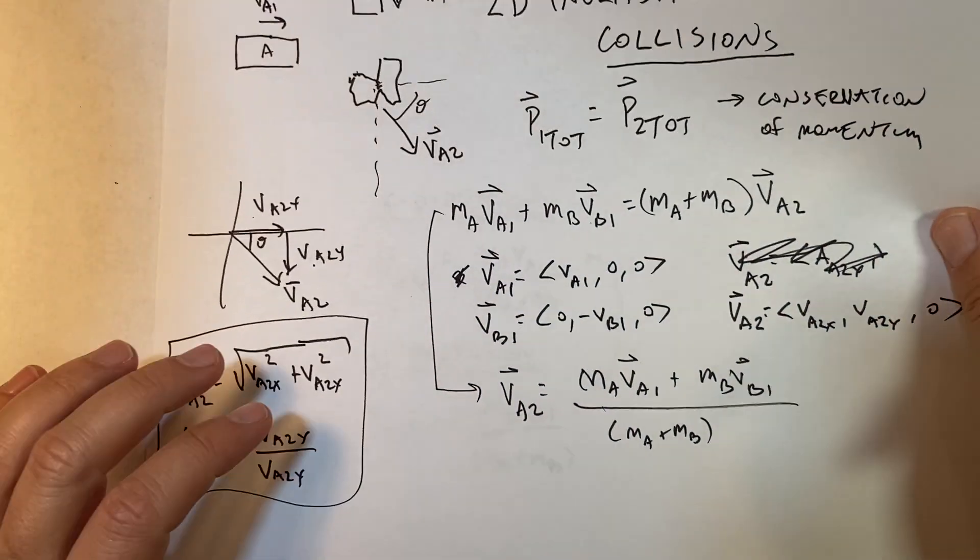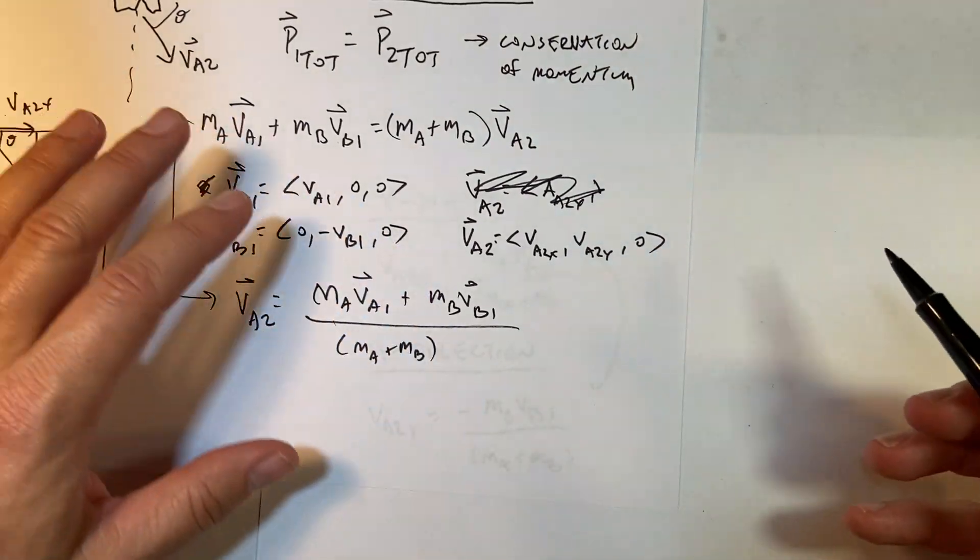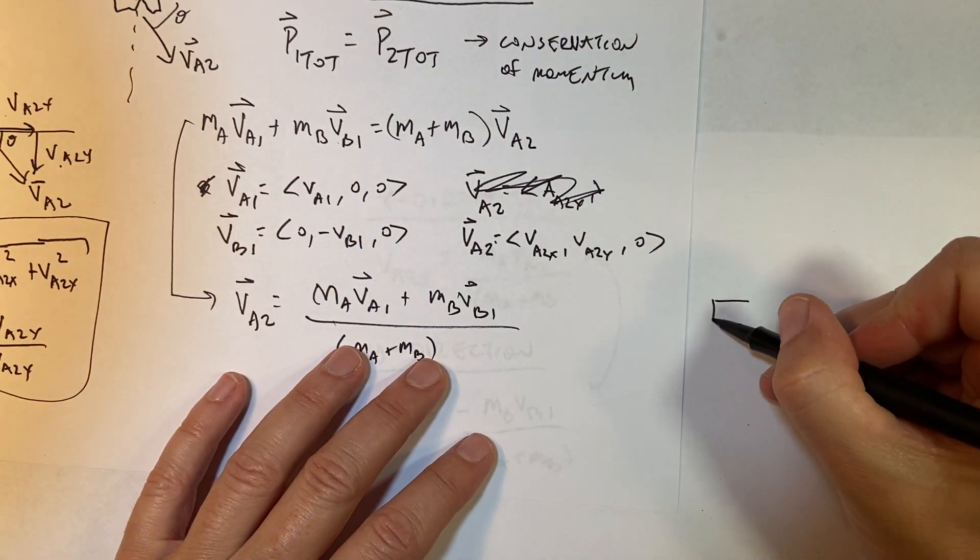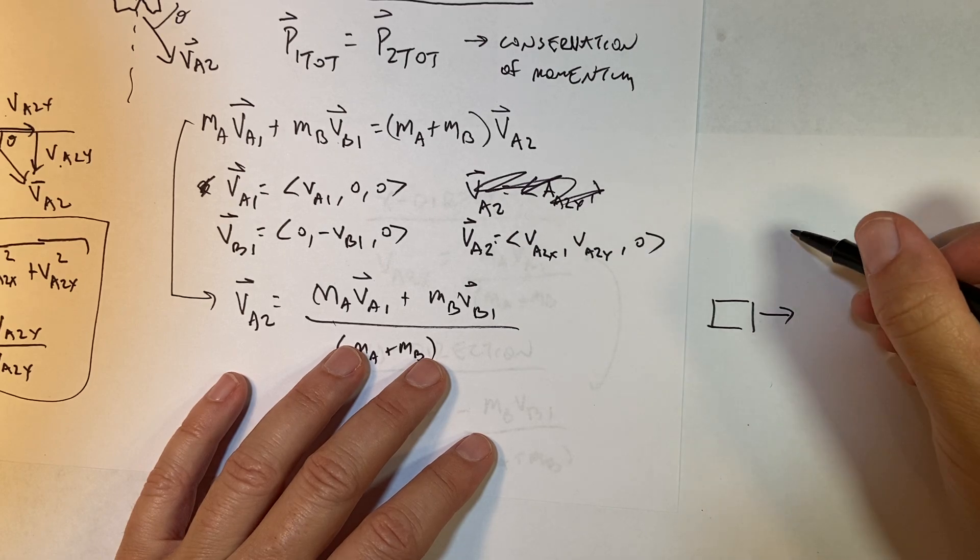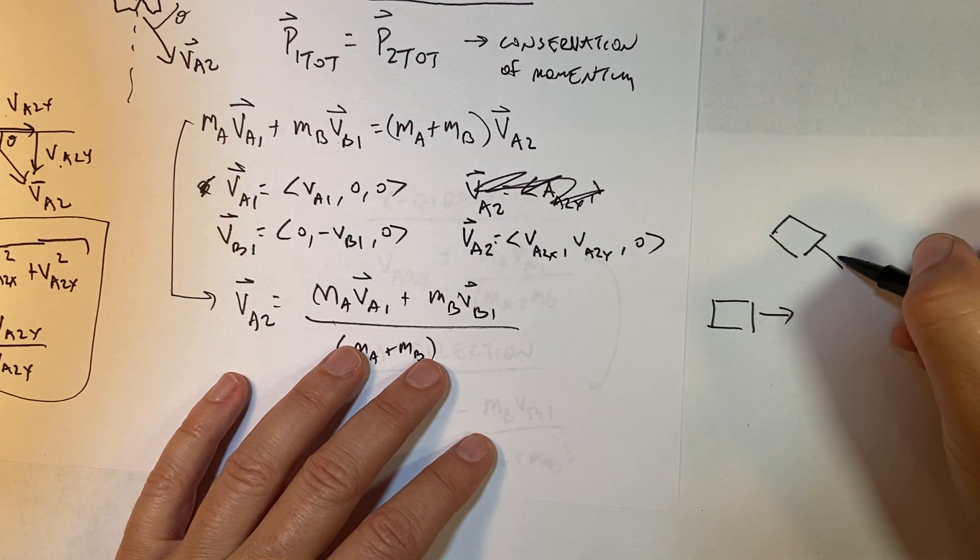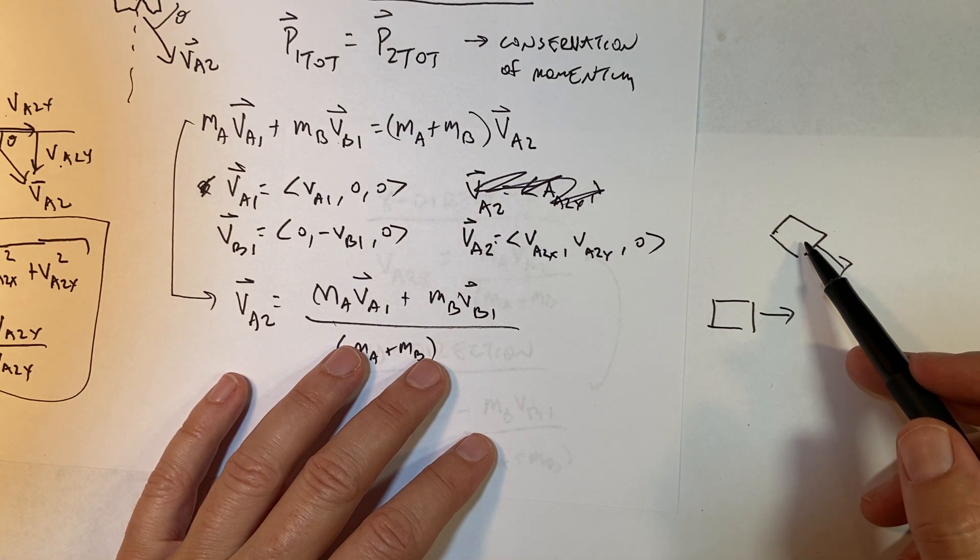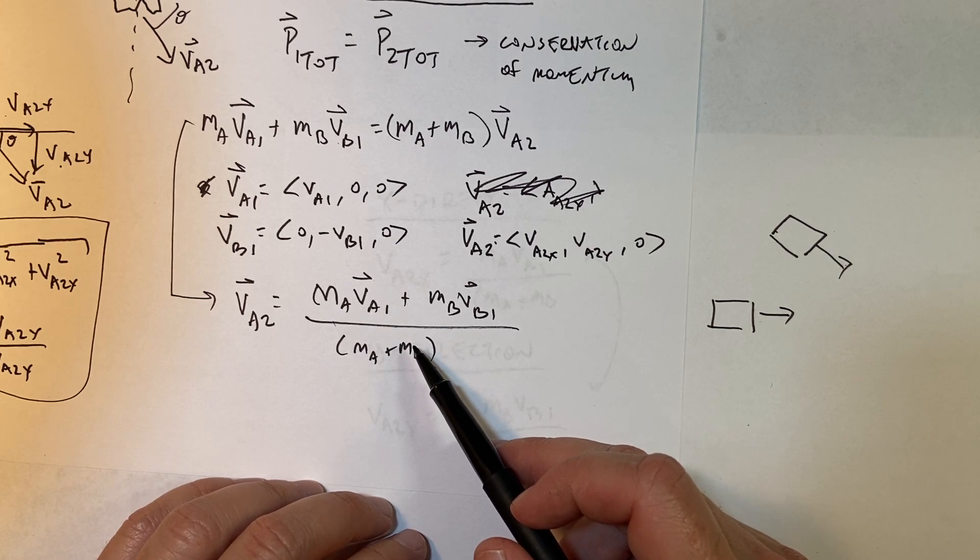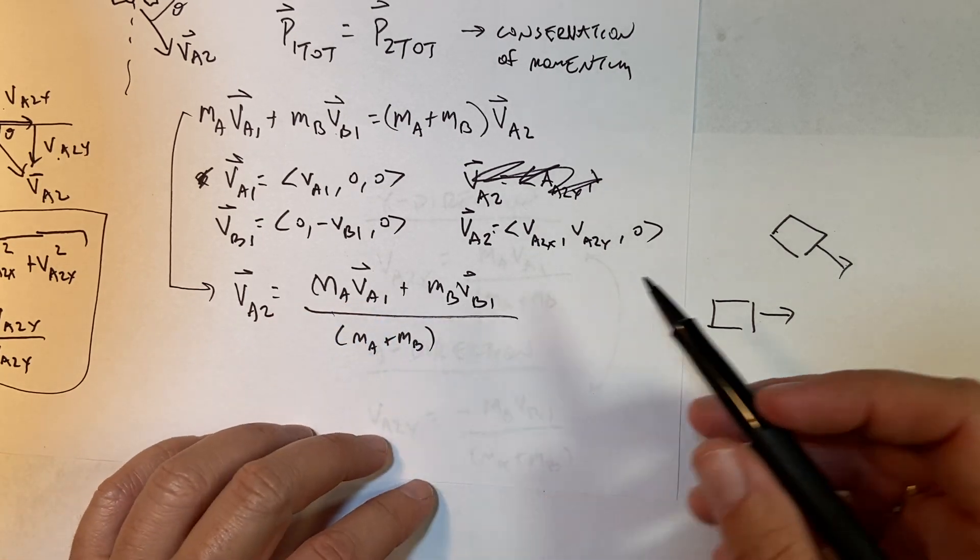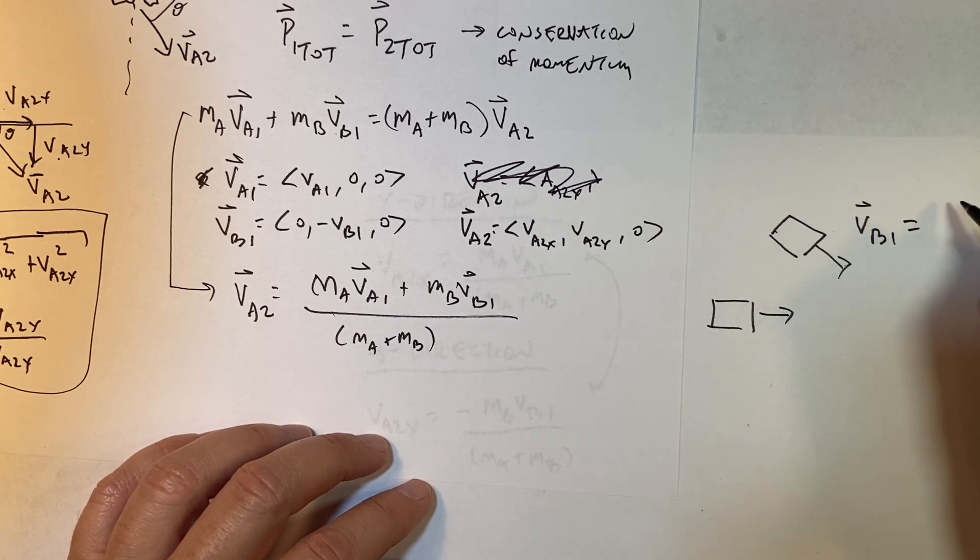Now why is this better? This is better because suppose I have the following situation. Here's car A, here's car B. Now it's not in either the x or the y. Well, this doesn't care. This doesn't matter.